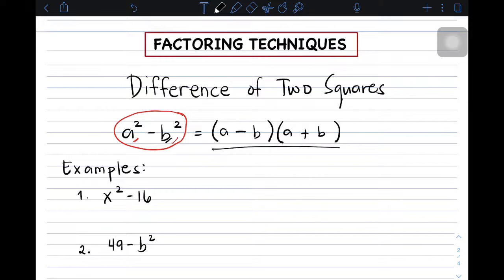Kailangan lang kasi alam niyo kung ma-identify kung yung term ba ay perfect square o hindi. So, sa numbers naman, it is important for you to know the different perfect square numbers like 1, 4, 9, 16, 25, 36, and so on. So, without further ado, let's go with examples.